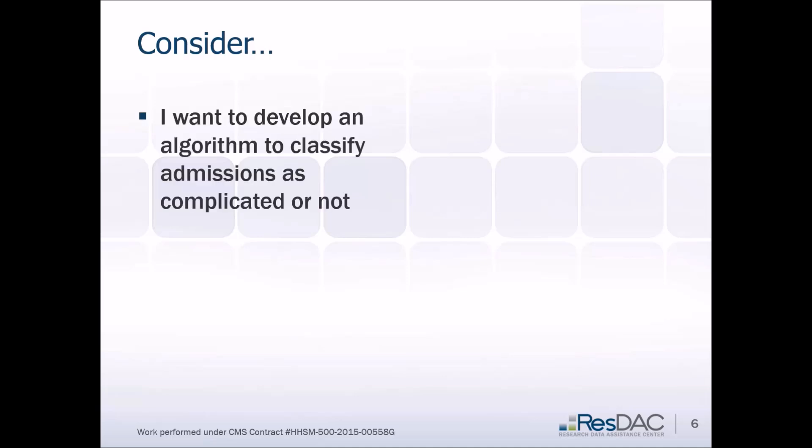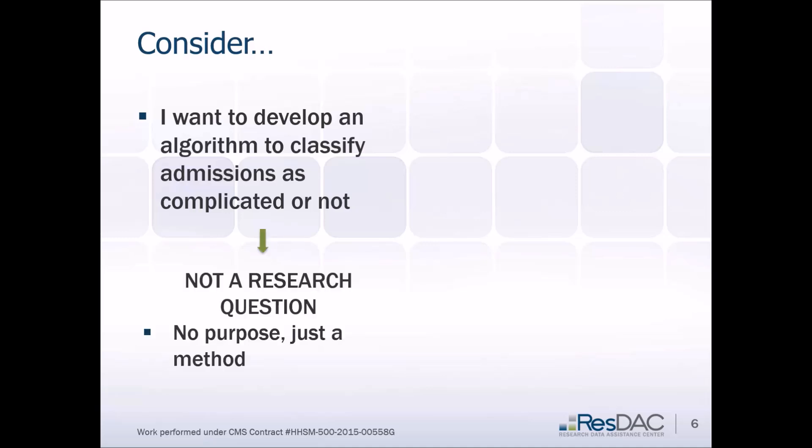Another example: I want to develop an algorithm to classify admissions as complicated or not. This is really important for people wanting to use Medicare data, as there is no field that says this is a complicated admission — we need to create our own classification system. However, as written, it's not a research question. There's no purpose for the tool; it's just a method.